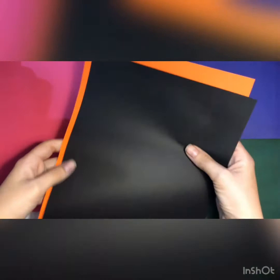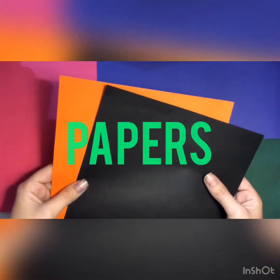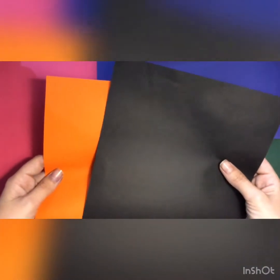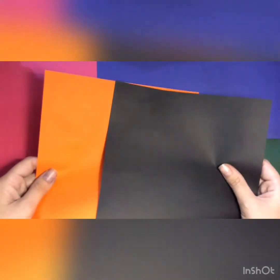First you're going to need paper. I have colored paper. If you don't have it, if you have only white, it's okay. I'm going to use orange and black. You need two pieces of paper.